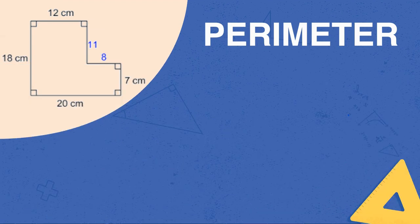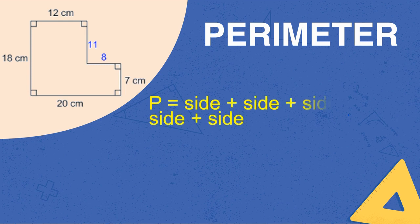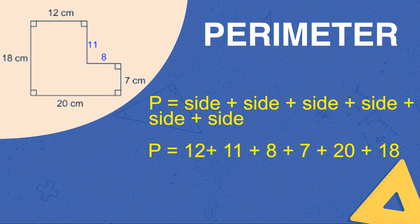Let's look at this shape as an example. There are 1, 2, 3, 4, 5, 6 sides. So our formula should look like this: side plus side plus side plus side plus side plus side. Now let's replace each of those sides with a number. That's 12 centimeters plus 11 centimeters plus 8 centimeters plus 7 centimeters plus 20 centimeters plus 18 centimeters. When we add all of that up, the perimeter should equal 76 centimeters.